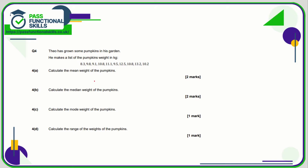Question number 4 — we're going to work out the mean weight. We add them all up and divide by the number of values. There are 10 values, so that's nice and easy. When you add all these weights together, you get 105.3. Dividing that by 10, you get 10.53.